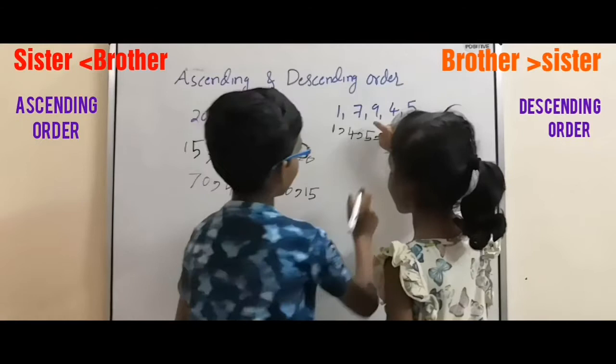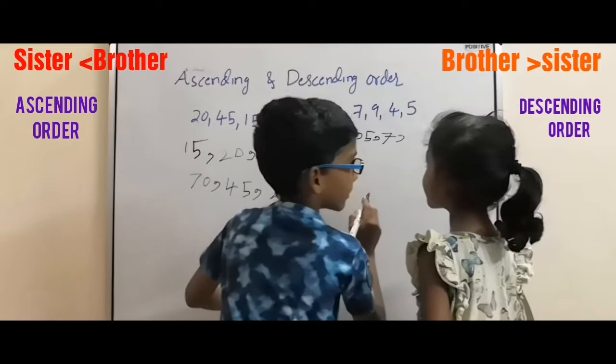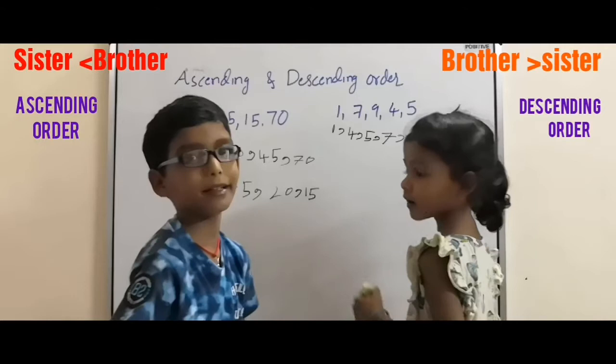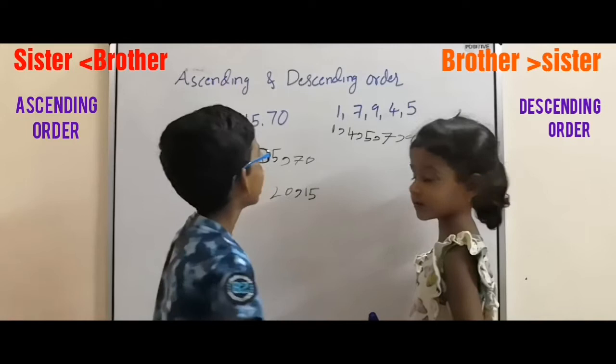Seven. Then the last one is nine. Very good. This is ascending order. She wrote ascending order. Some she didn't know, that's why I am telling.